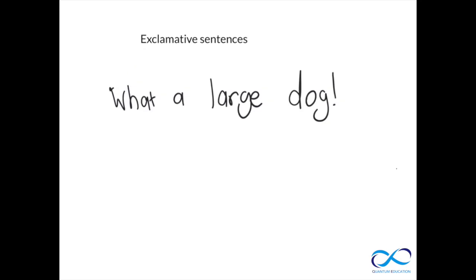The final type of sentence is exclamative. Exclamative sentences are very different to declarative and other sentences — sometimes they even seem slightly ungrammatical, but it is actually a sentence type. Normally these don't have a verb at all. For example, 'what a large dog!' — this could function as a subject, but importantly there is no verb. There's no 'the dog is large' or 'that is a large dog.' It's just an exclamation.